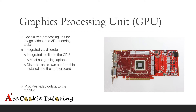If you need a bit more power, the discrete graphics card — which we can see in the picture — is a graphics processor on its own card or chip installed into the motherboard in addition to the CPU. These discrete graphics cards are recommended for gaming and video editing tasks where you need a lot of graphical power. The graphics card is also responsible for providing video output to your monitor.